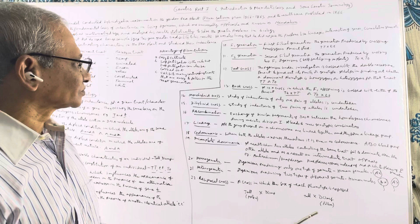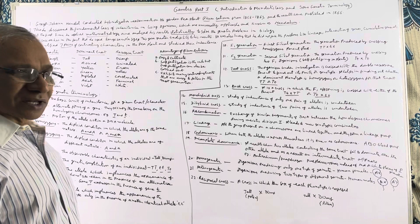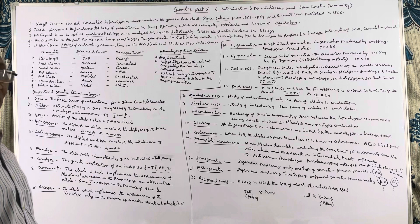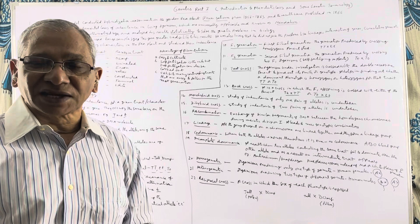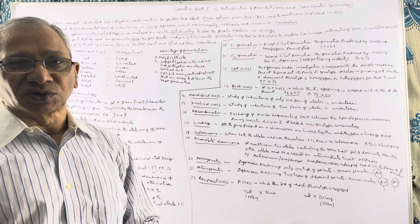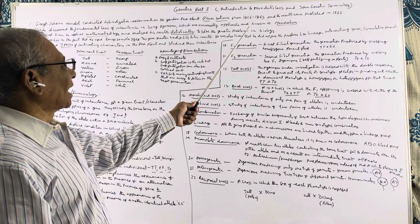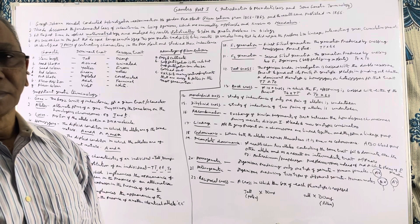What did Mendel discover? He discovered the fundamental laws of inheritance in living organisms, which are applicable universally to all living beings — whether plants, animals, or bacteria. These laws are now known as Mendelism. Mendel is also considered the father of genetics.